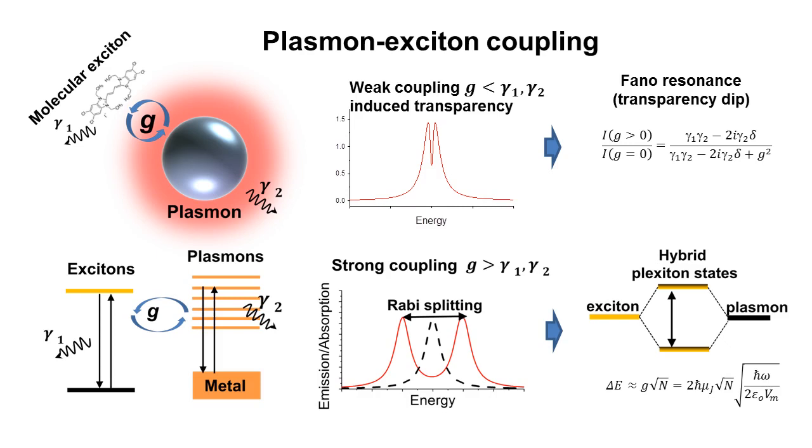The weak plasmon-exciton coupling is often expressed as the formation of a transparency dip at the energy of molecular transition in the initial plasmon spectrum as a result of Fano interference. The strong coupling is characterized by the splitting of the initial plasmon band into two hybrid plasmon-exciton-polaritonic bands, which are separated by an energy gap greater than the half-width at half-maximum of the initial plasmon band.